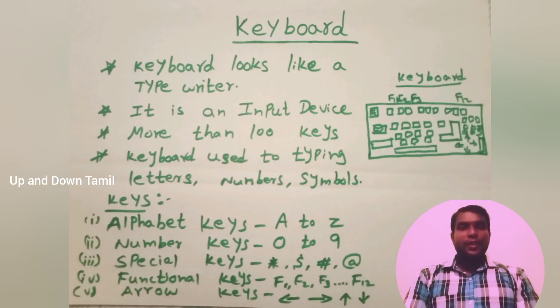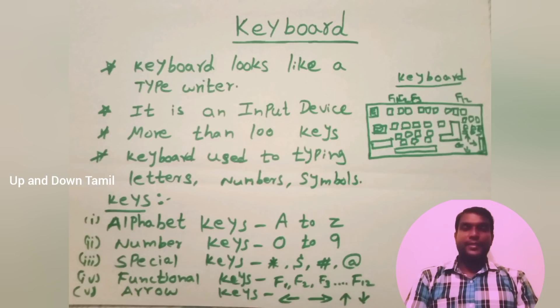What is the number keys or numerical keys? Number keys zero to nine. This is the numerical keys or number keys, zero to nine. Sometimes double digit number, triple digit number, and so on. Number keys is zero to nine, that is numerical key.